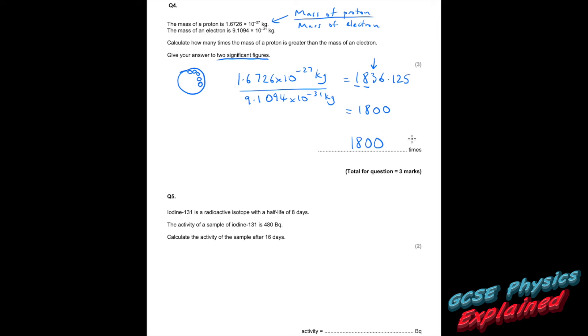It's worth three marks and we need it to two significant figures. The first significant figure is 1, the second is 8. Looking at the third figure — it's a 3, so we round down. The answer is 1,800. Make sure you know what a significant figure means compared to decimal places, because some students mix them up.